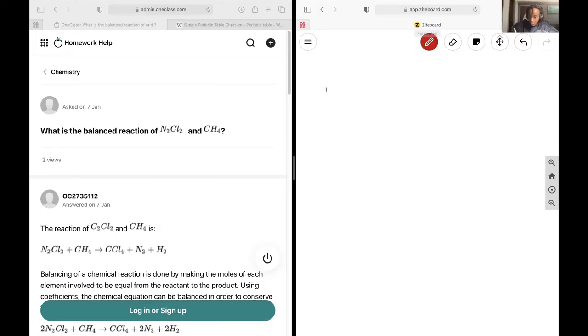Next up, I'd like a balanced reaction between N2Cl2 and CH4. So we first just write out the reactants and products.